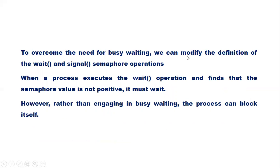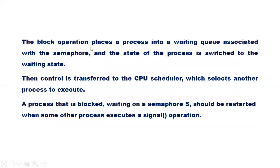To overcome the need for busy waiting, we can modify the definition of the wait and signal semaphore operations. When a process executes the wait operation and finds that the semaphore value is not positive, it must wait. However, rather than engaging in busy waiting, the process can block itself. The block operation places the process into a waiting queue associated with the semaphore and the state of the process is switched to the waiting state. Then control is transferred to the CPU scheduler, which selects another process to execute. A process that is blocked waiting on semaphore S should be restarted when some other process executes a signal operation.